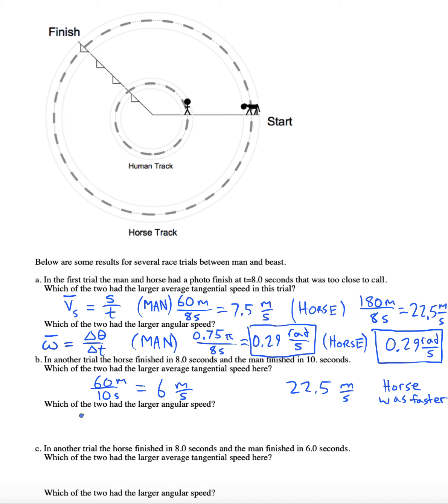What about the angular speed now? Well the horse is still going to have 0.29 radians per second. The man's got 0.24 radians per second. So the horse had the larger omega - larger V and larger omega.